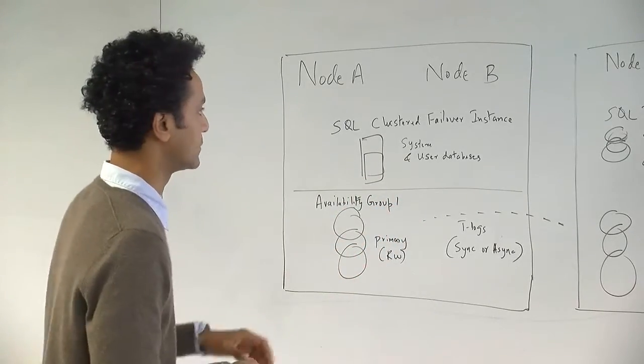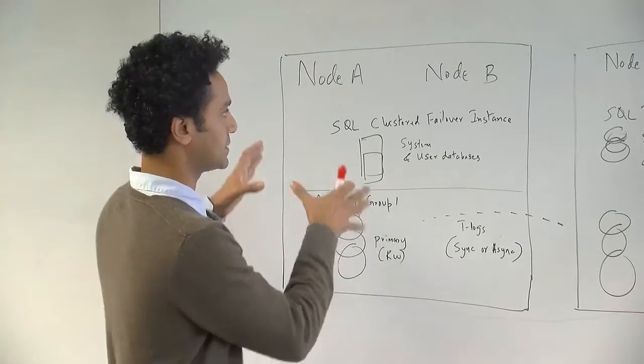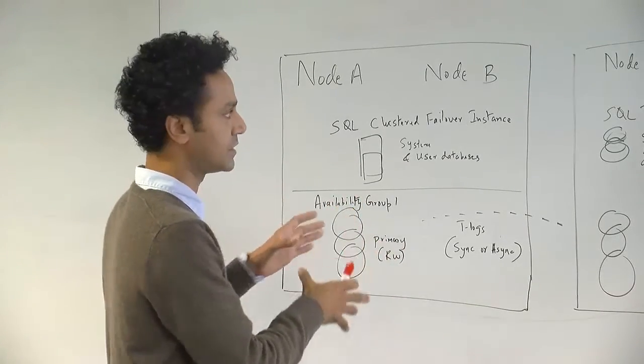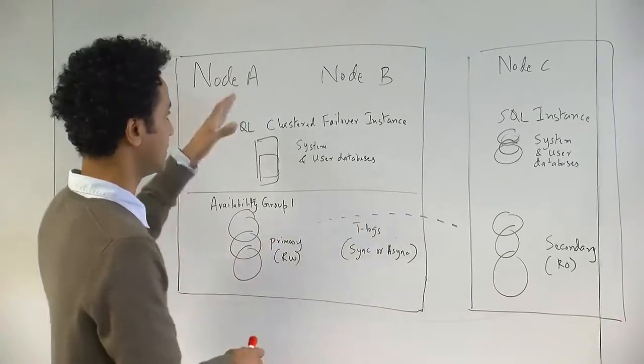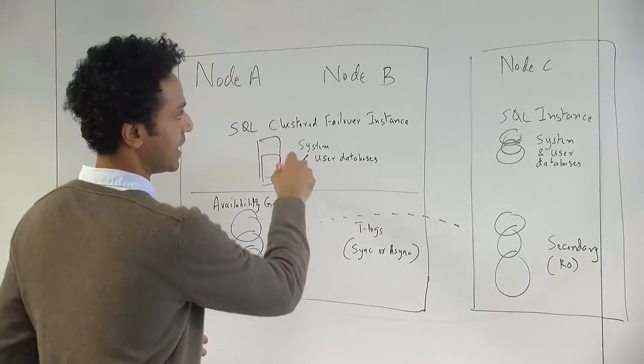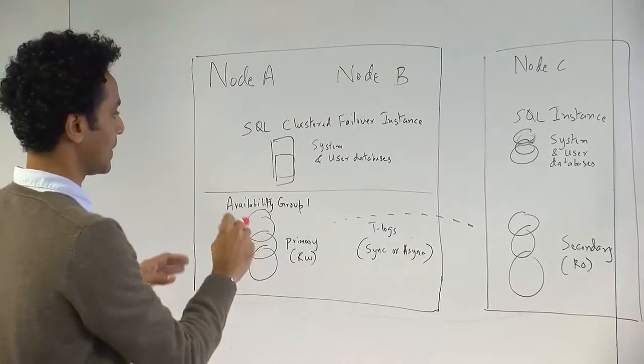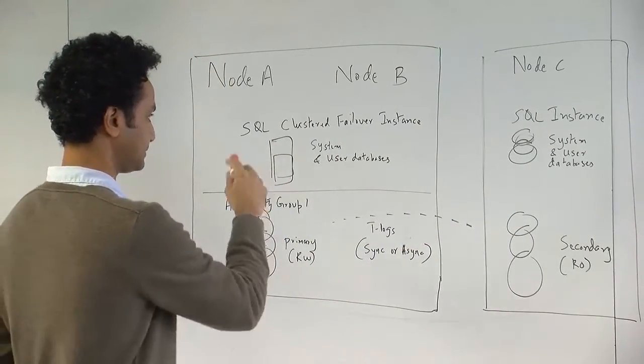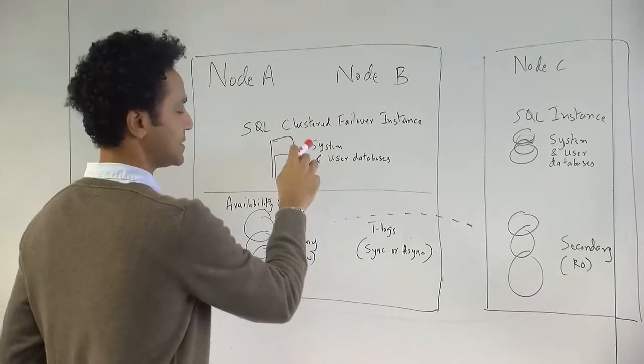When you look at availability groups, this specific example is very simple. When you say this is node A and node B is a single cluster and node C is a standalone node sitting on a different data center. So node A and node B could be in data center A and node C could be in data center B. Within node A and node B, since it's part of a cluster, you have a set of system and user databases.